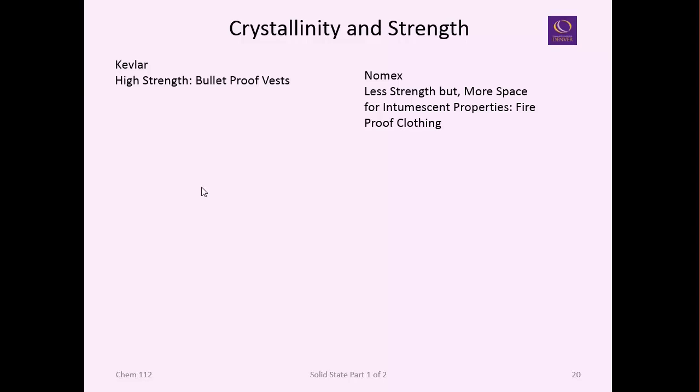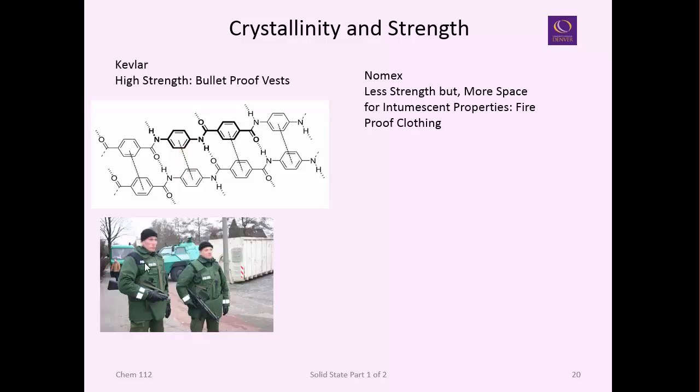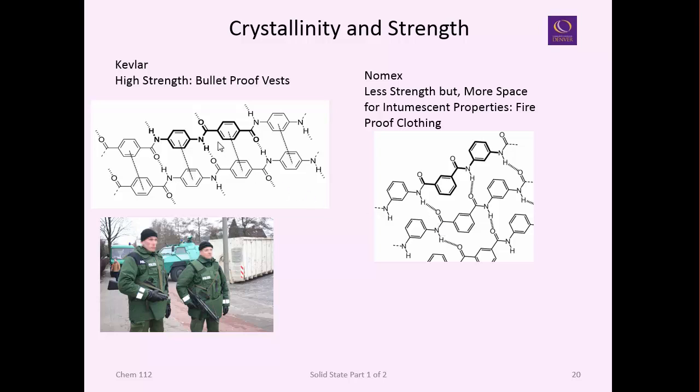Another factor of why we want to know about crystallinity is it's related to strength. Here's Kevlar, which we talked about earlier. It's this nice polyaramid, very organized. It has the hydrogen bonds and van der Waals attractions between the rings. These give rise to bulletproof vests. But with a little change in structure, connecting these aramid groups opposite the ring in the para configuration.